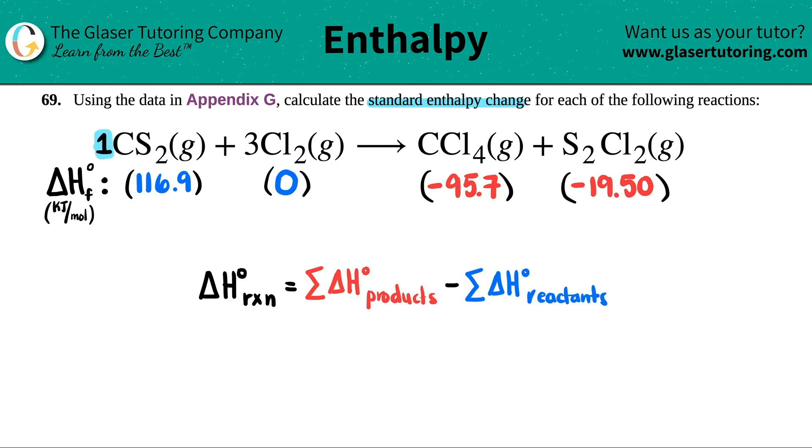So for example, there was one CS2, so I would just multiply by one. There was three of these, so I multiply by three. There was one of these, so I multiply by one. And the same thing here, there was one of these, so I multiply by one. Some of the numbers aren't going to change, but I just want to show you the process.